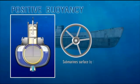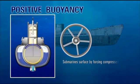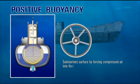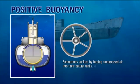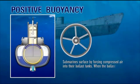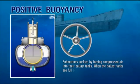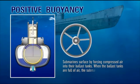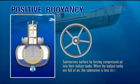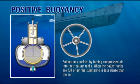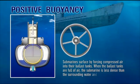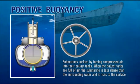Submarines surface by forcing compressed air into their ballast tanks. When the ballast tanks are full of air, the submarine is less dense than the surrounding water and it rises to the surface.